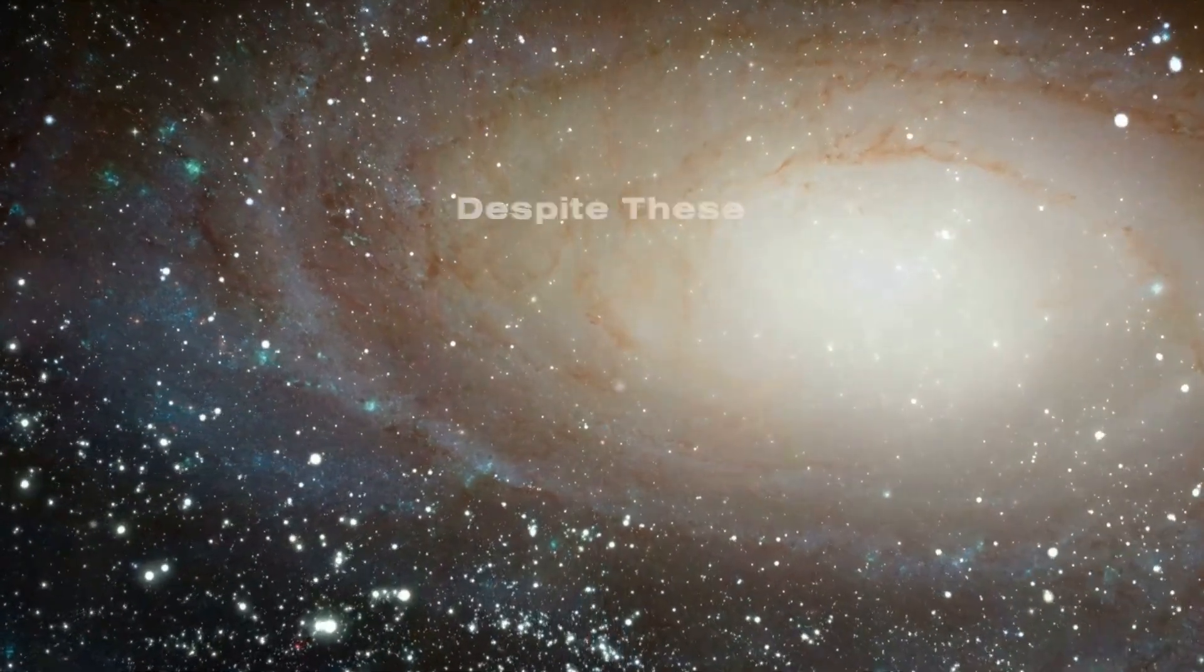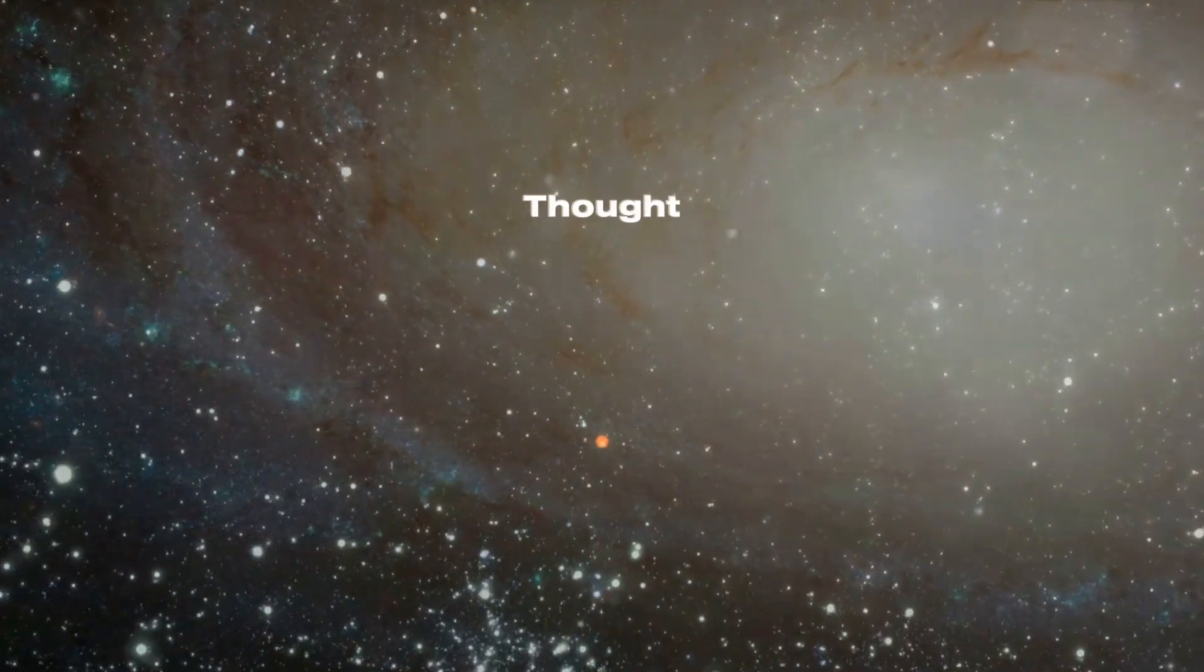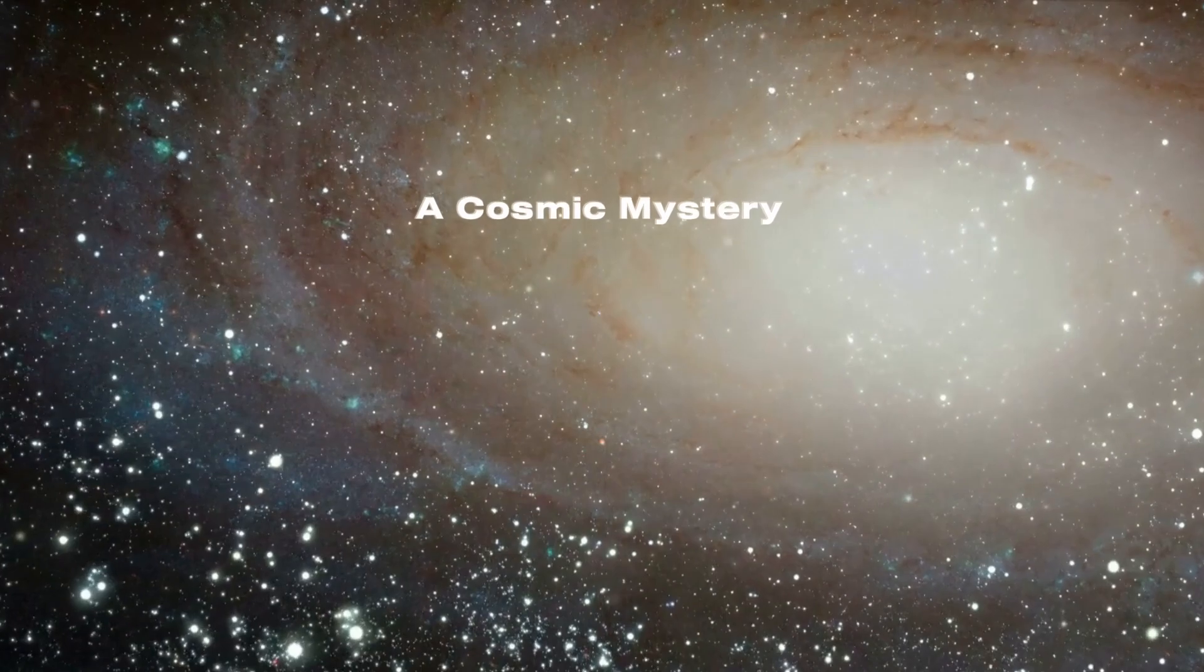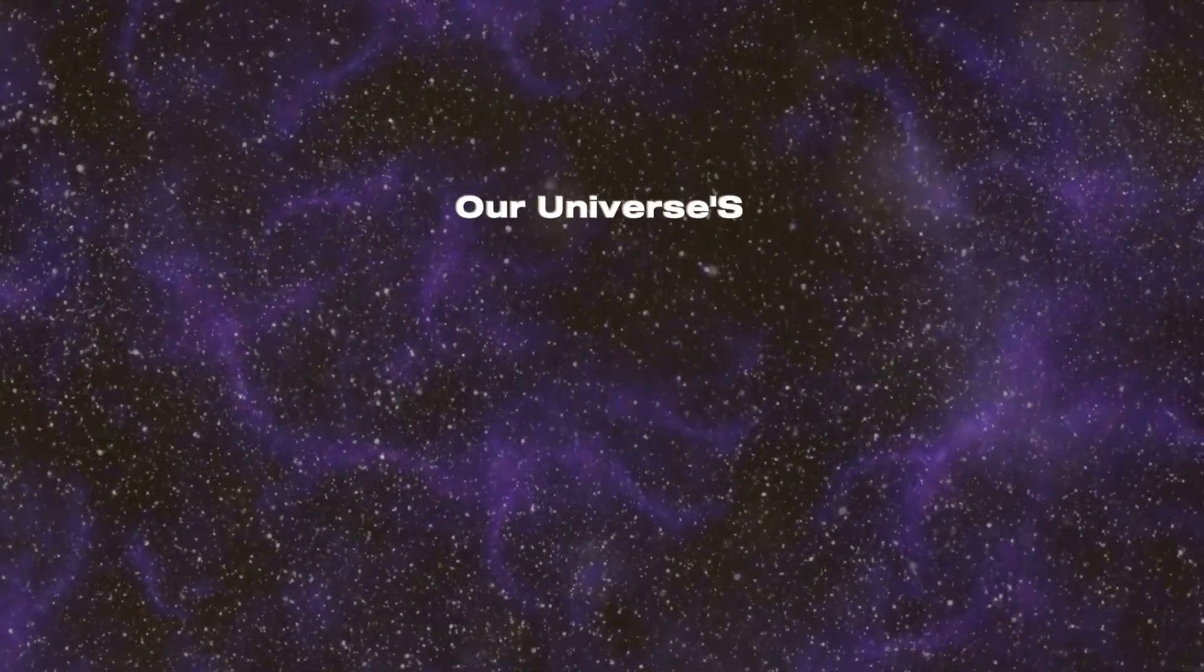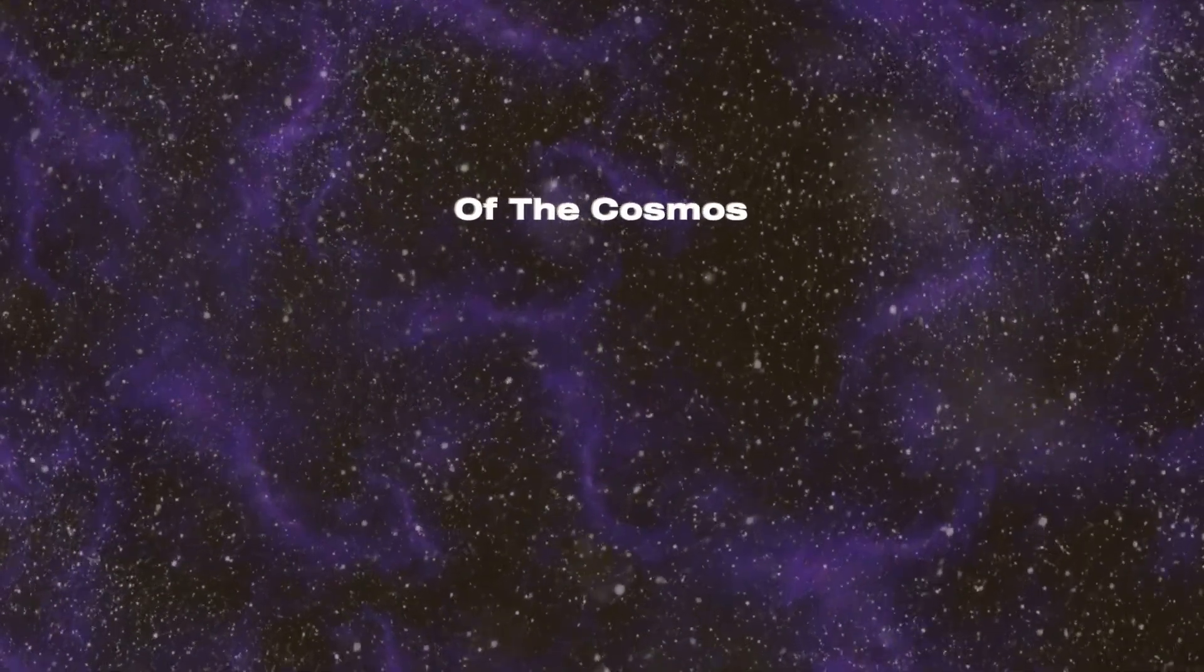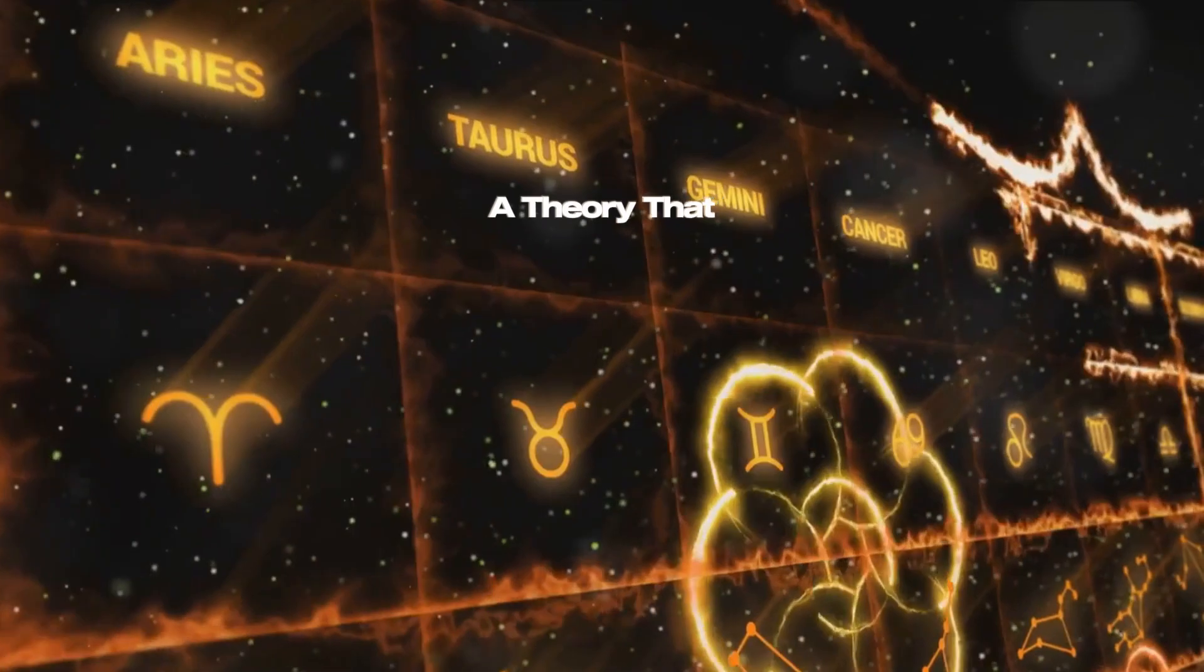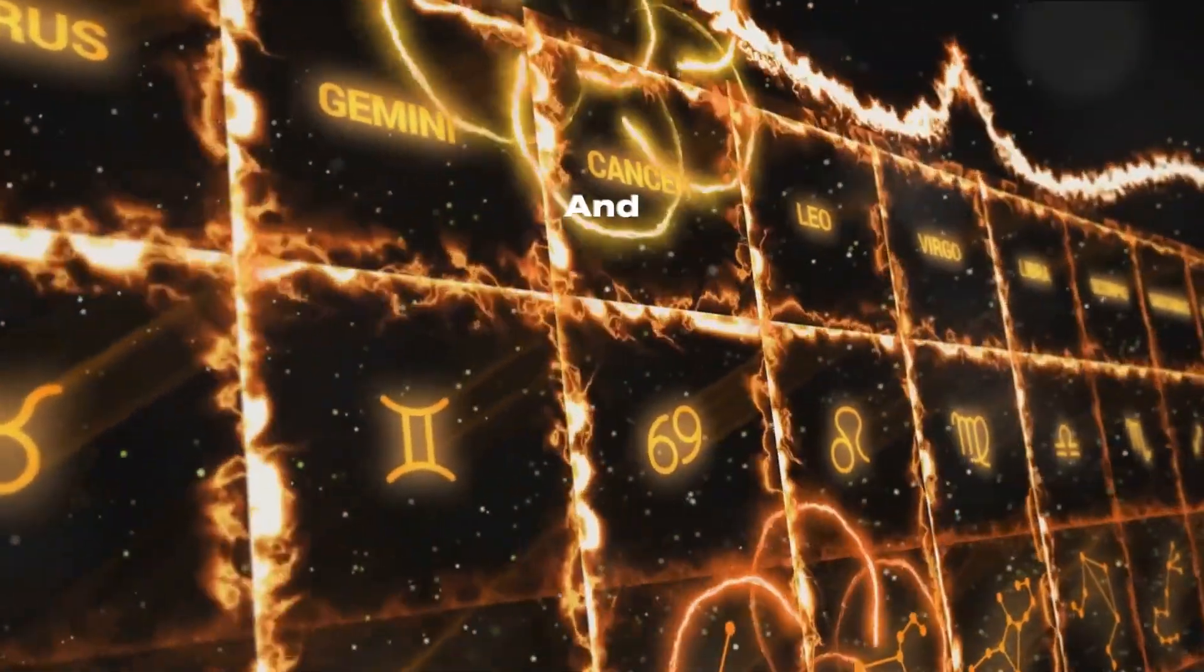Despite these challenges, the Ekpyrotic universe model is a compelling theory that continues to provoke thought and discussion. It's an intellectual adventure, a cosmic mystery that keeps us questioning, exploring, and learning. Both the CCC and Ekpyrotic universe models offer unique perspectives on our universe's origins. In our quest to decipher the mysteries of the cosmos, we have encountered the conformal cyclic cosmology model, a theory that envisions our universe as an eternal cycle of big bangs and big crunches.